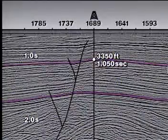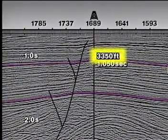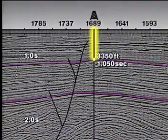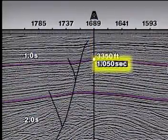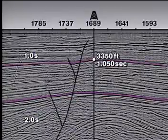We know that the depth from the surface to the shallow interface is 3,350 feet. This is also the interval thickness of the shallow layer. And the two-way time to the shallow horizon is 1.050 seconds, which is also the interval time.